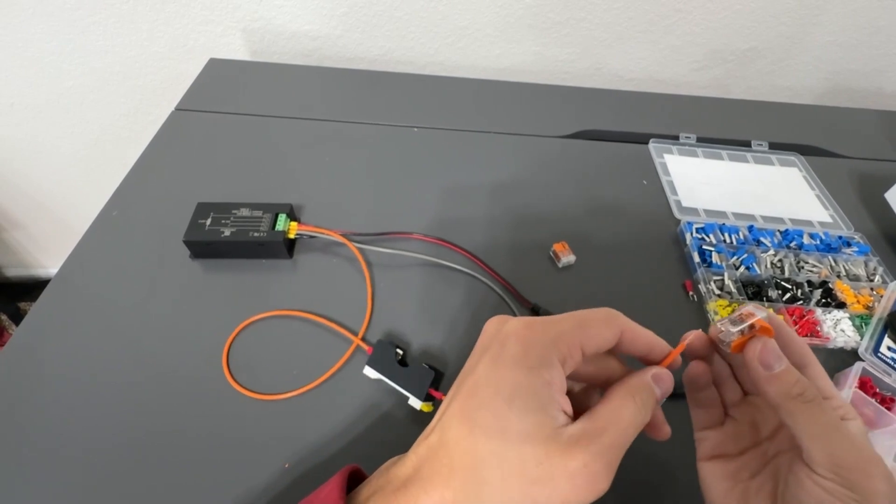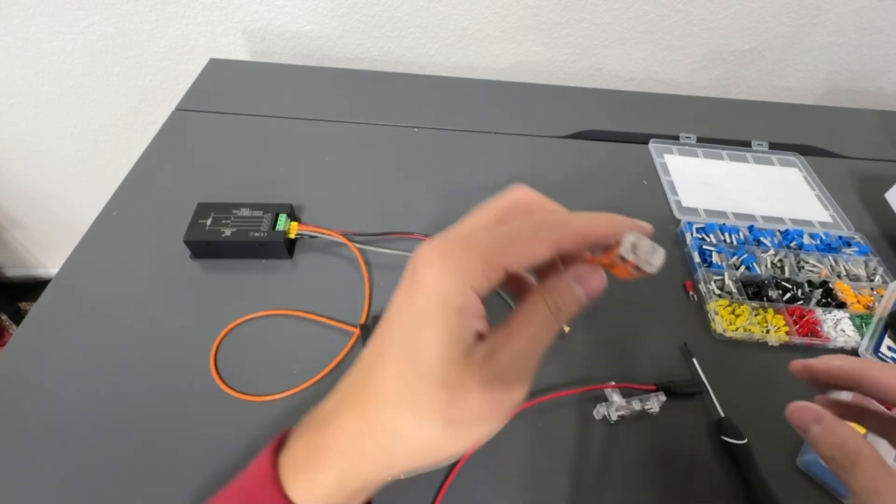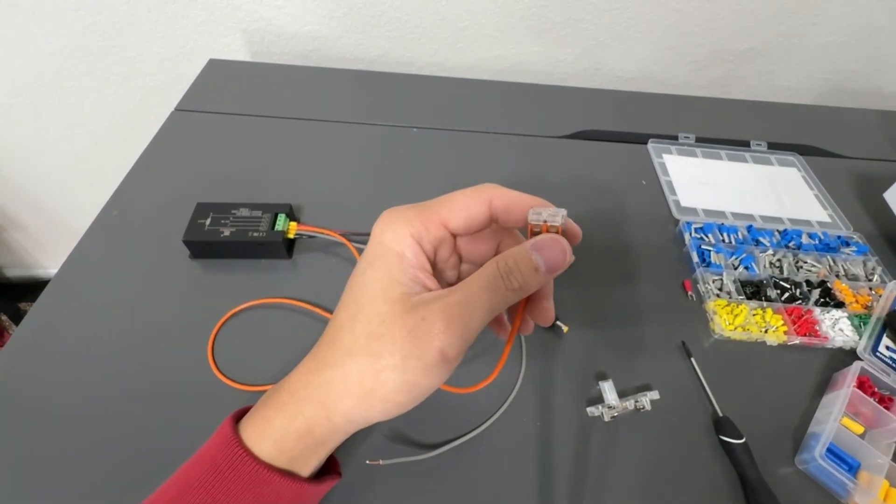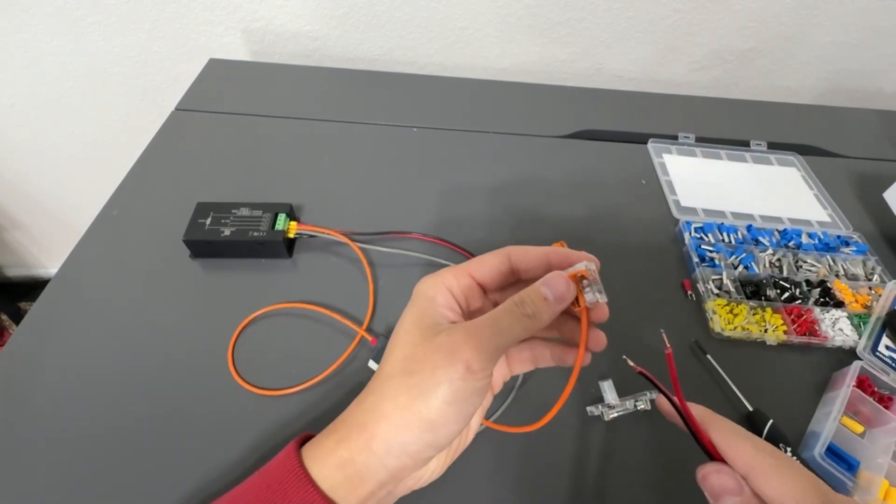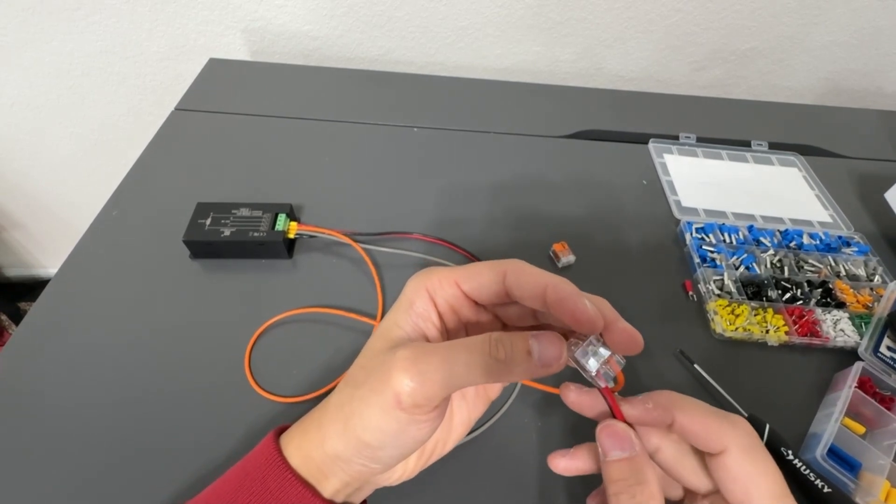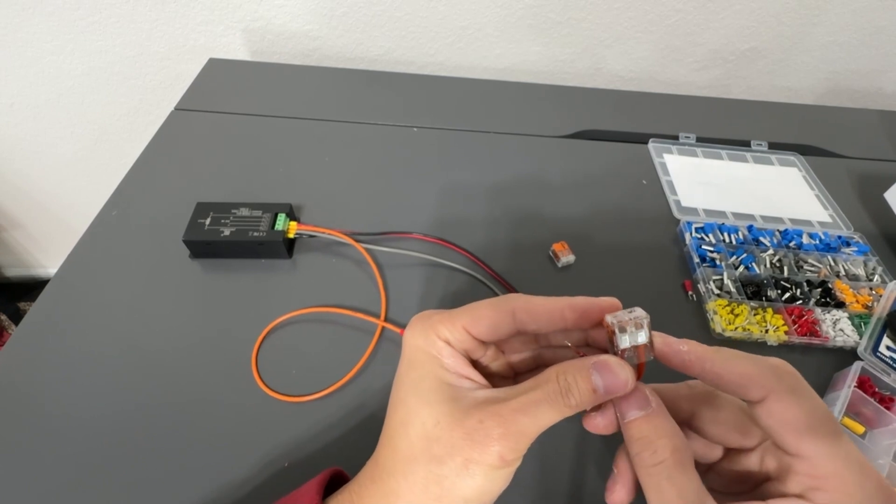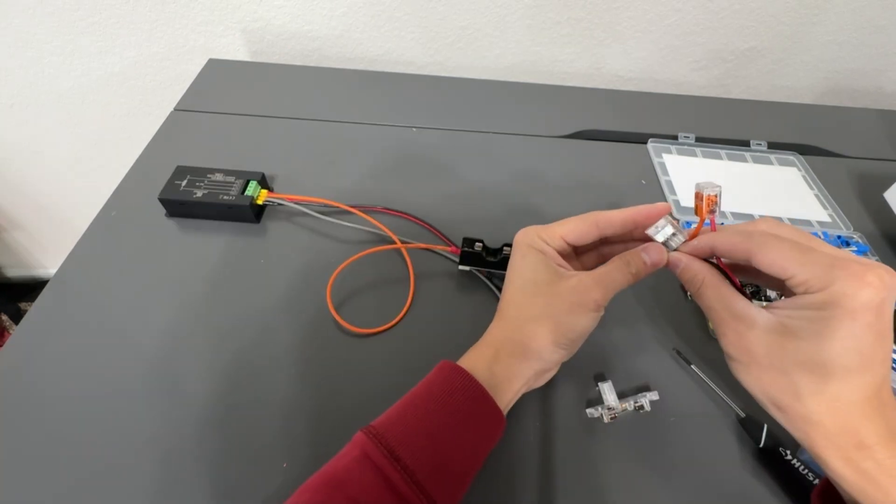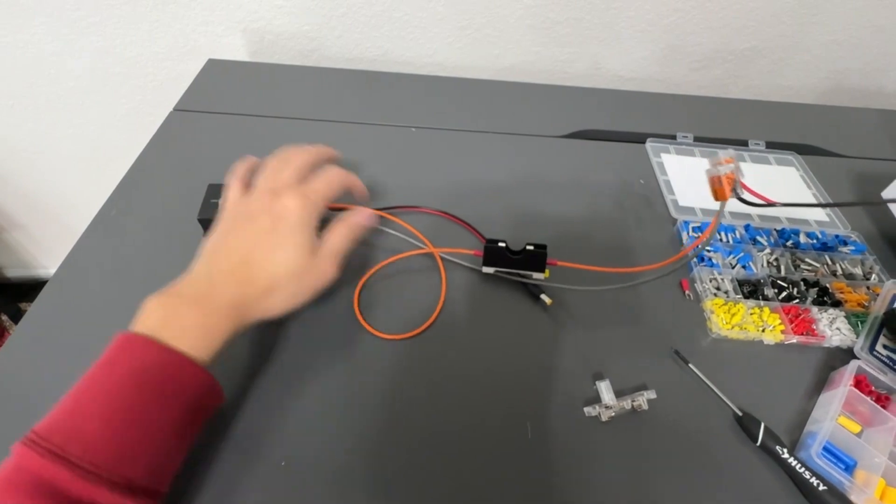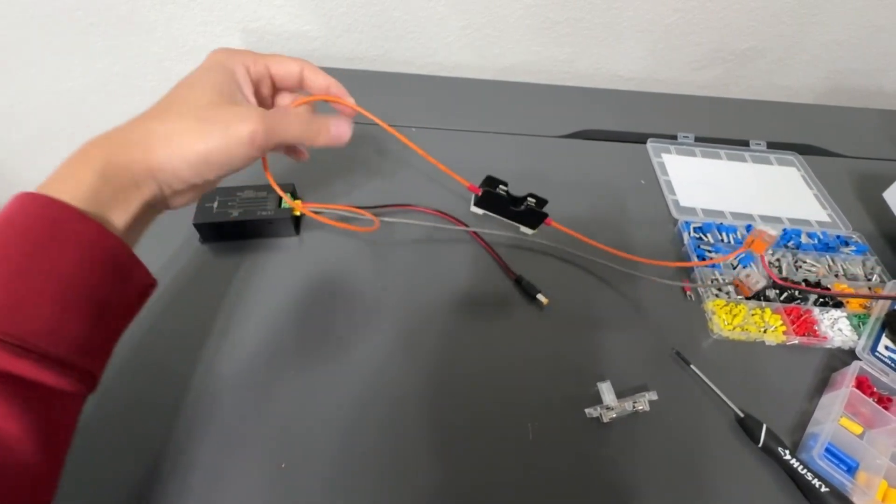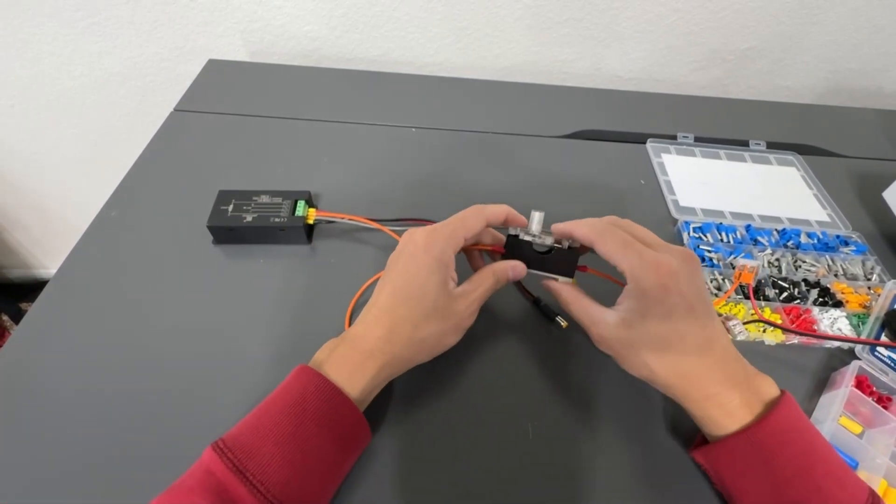And then you can use the Wago nut, clamp it down. And then on the other side you use another connector. I'll leave the link in the description. So you put the red into the Wago nut - so the red goes to the orange and from the black one you connect the black one to the gray color. And then you put a few caps on.